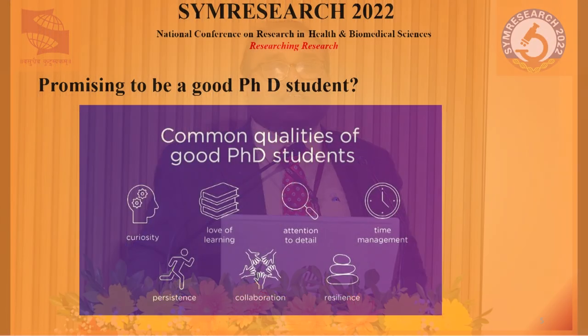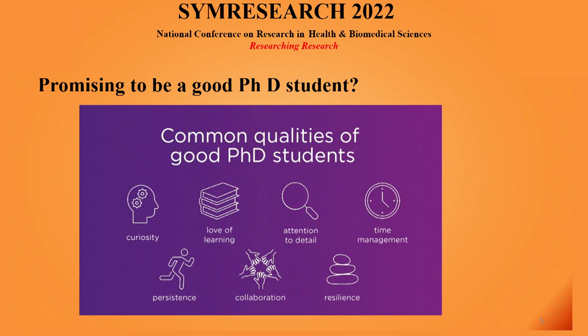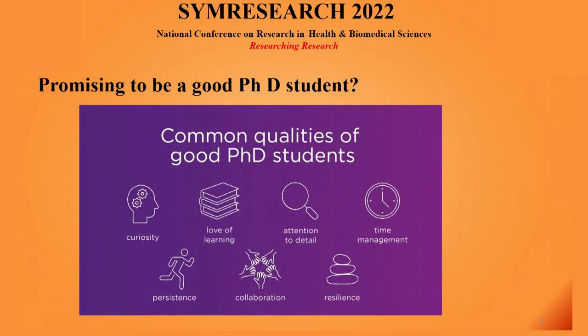Even if you fail, it doesn't make any difference. In the Research Advisory Committee meetings, the verdict given to a student is sometimes 'C' — meaning the proposal requires major changes — and many students get dejected. But it doesn't make much difference. It is a journey where you get inputs to improve upon. Similarly, you may get major revisions on a paper; if you work on them, your research will go through peer review. So curiosity, love for learning, attention to detail, collaboration, resilience, and many other characteristics have to be there.